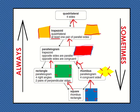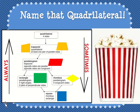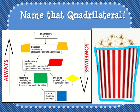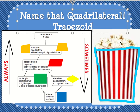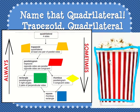Let's go ahead and practice — let's name that quadrilateral, my favorite game show. We're going to look at the popcorn box. It is a quadrilateral because it has four sides. So let's think about what is the most specific name. Hopefully you said that's a trapezoid. We know it's a trapezoid because it has one pair of parallel sides — the top and the bottom are parallel, but the sides on the left and right are not. All trapezoids are always quadrilaterals, so it's a trapezoid and a quadrilateral.